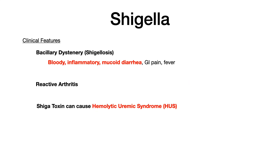Clinically, Shigella causes three things. First, it causes bacillary dysentery, also known as Shigellosis — the stereotypical bloody, inflammatory, mucoid diarrhea. This is probably what's showing up on your exam. If you have a patient with bloody inflammatory mucoid diarrhea, you can narrow it down to just a few pathogens, with Shigella being one of them.